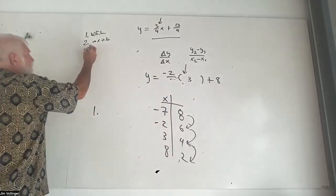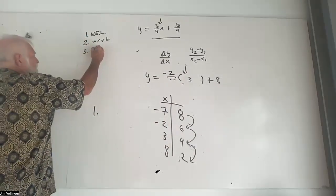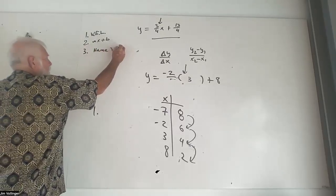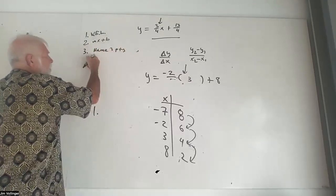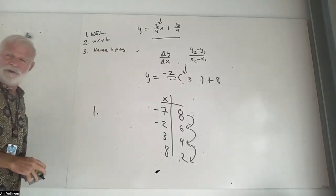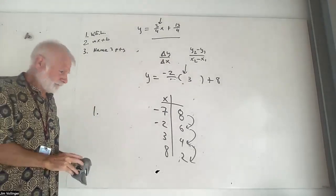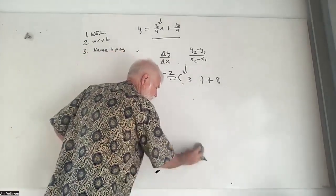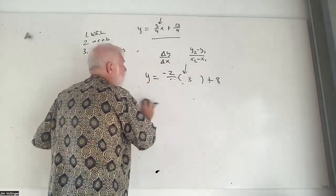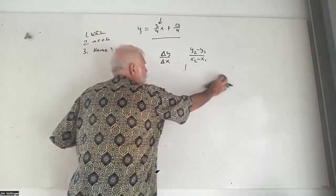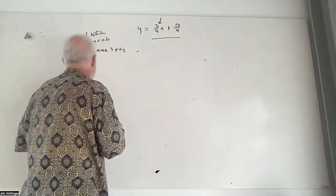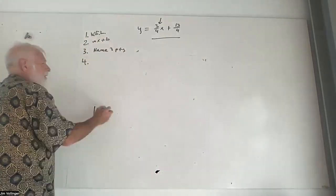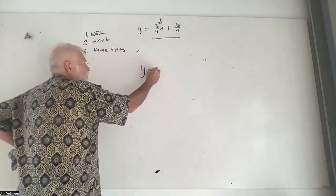So: MX plus B — name three points. I'll keep track of what I'm expecting you to know about linear functions. I'm expecting you to be able to graph.